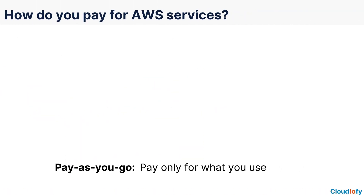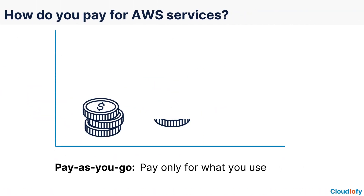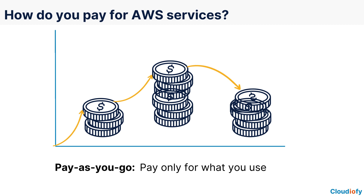First, AWS has the on-demand pricing model, which allows you to pay for the resources you use by the hour or second without any long-term commitments. This model is suitable for unpredictable workloads or short-term projects.